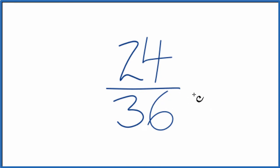So to do that, we need to find a factor that goes into 24 and 36. We're looking for what's called a common factor. We want the greatest common factor.